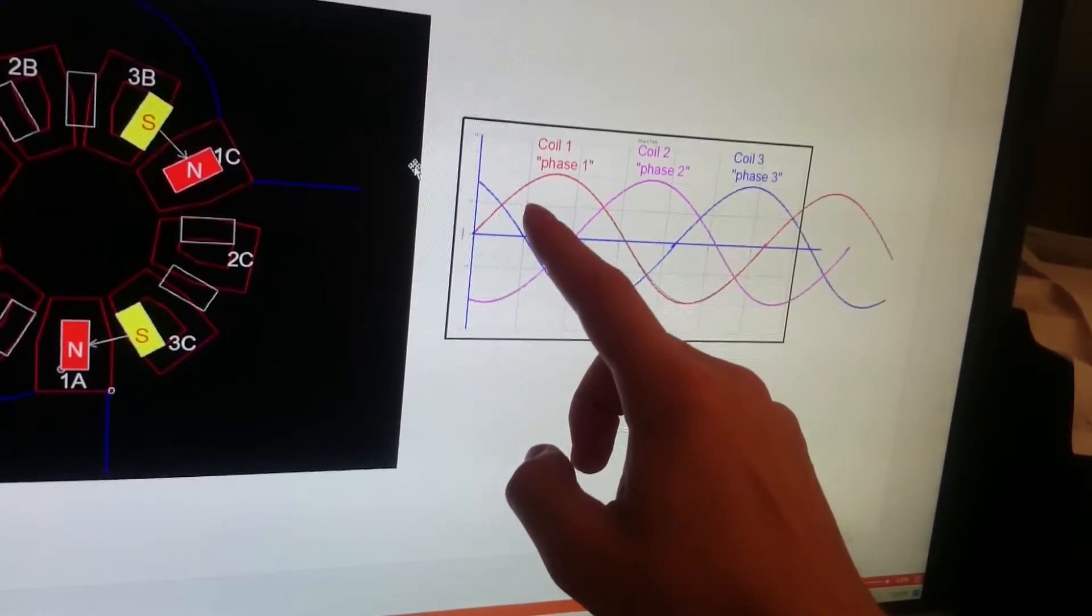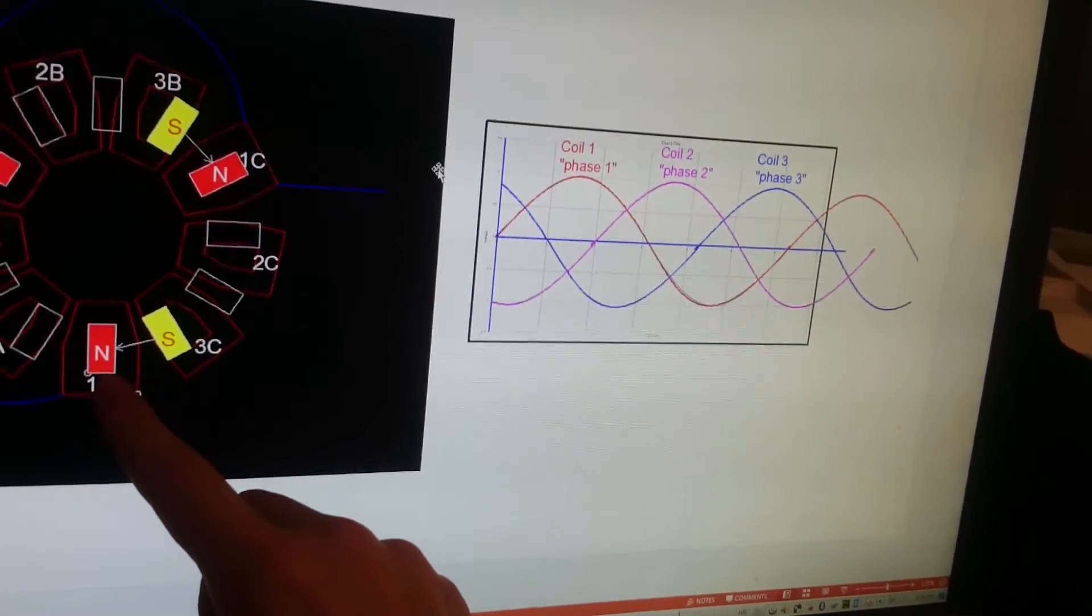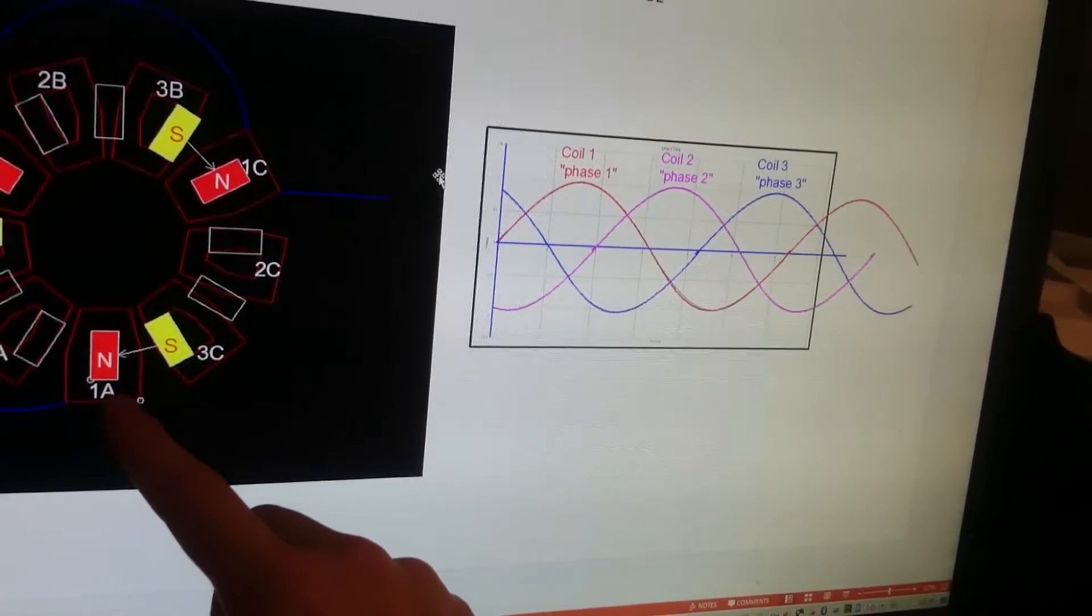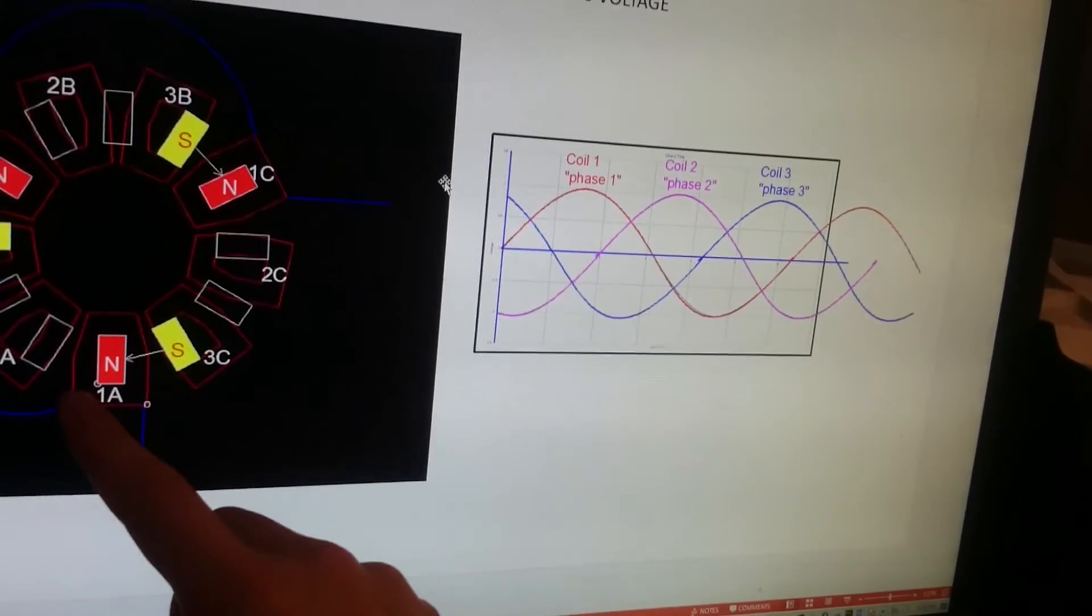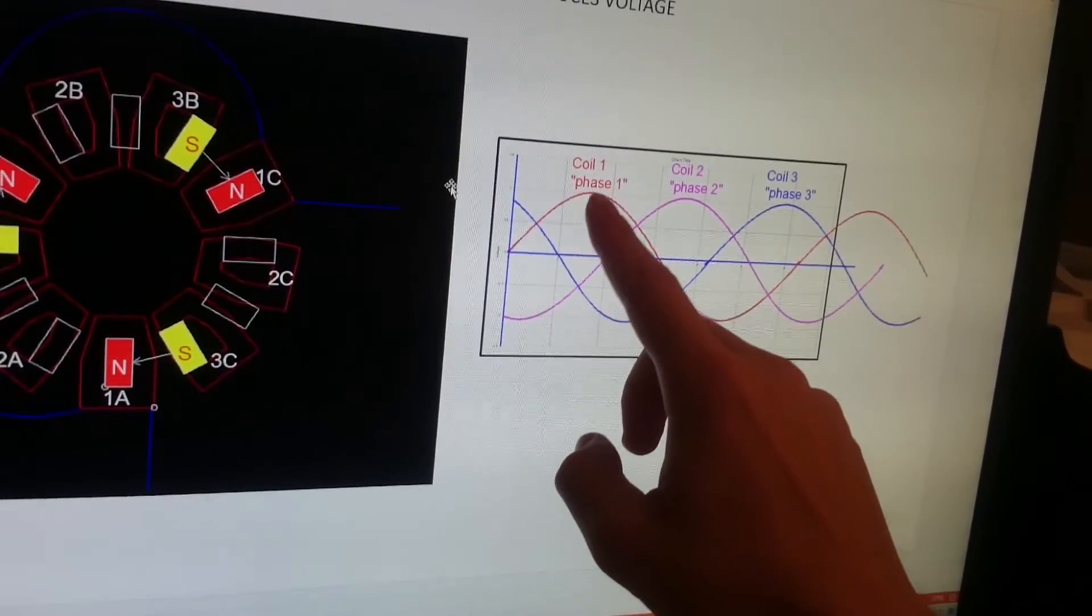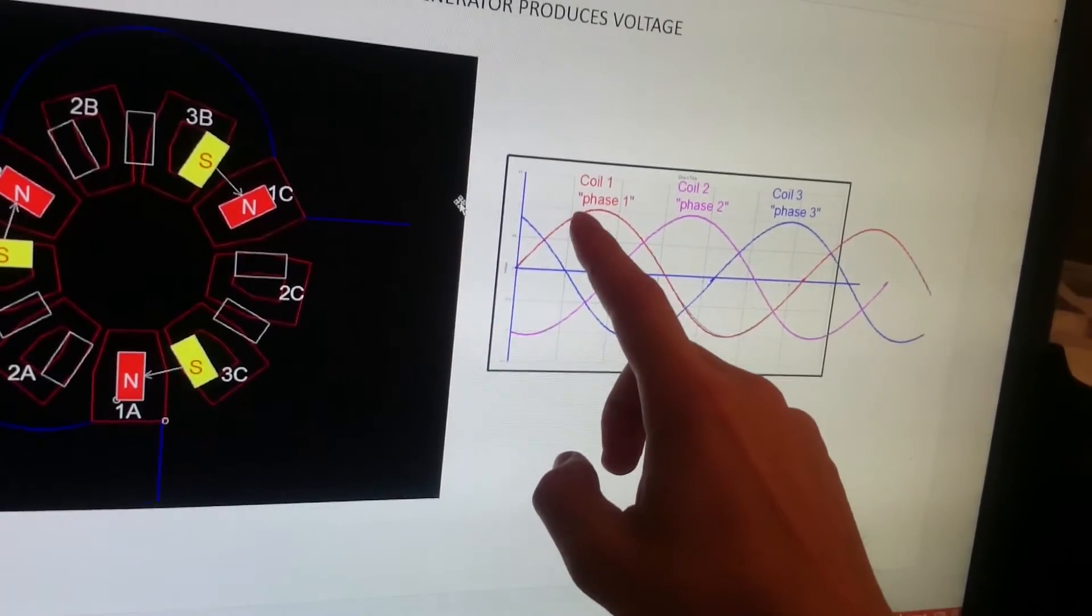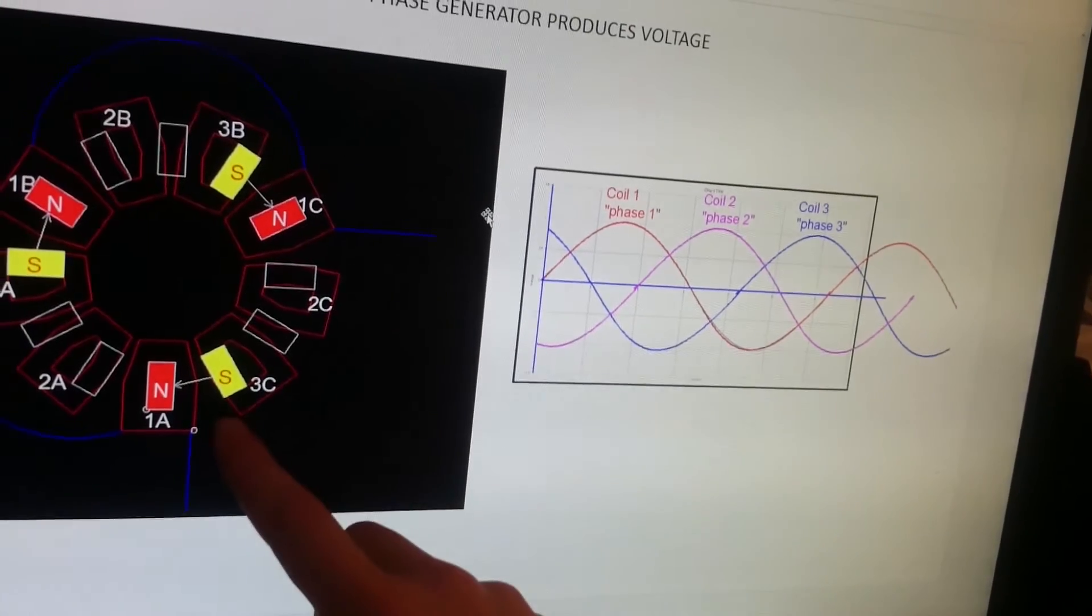When the north-facing pole magnet crosses above coil 1A, 1B, and 1C, we have plus 24 volts. This peak over here represents the plus 24 volts.